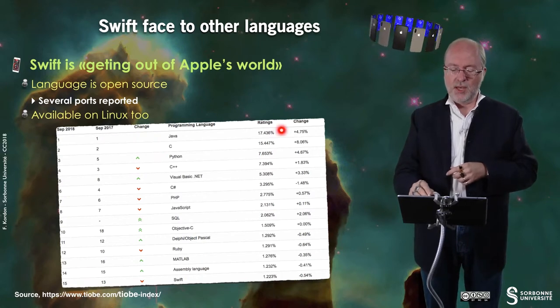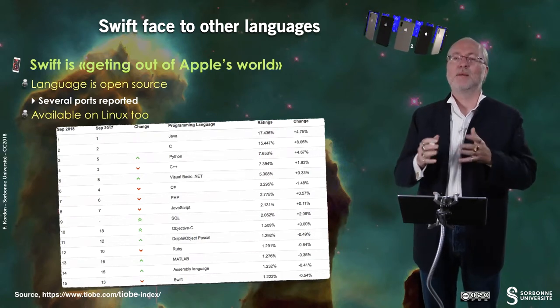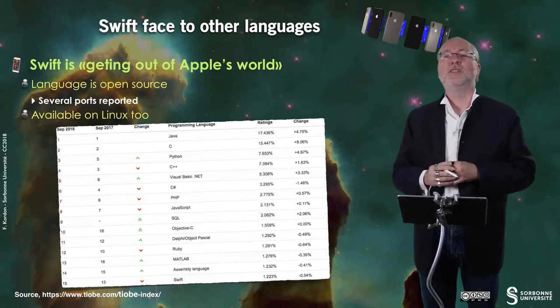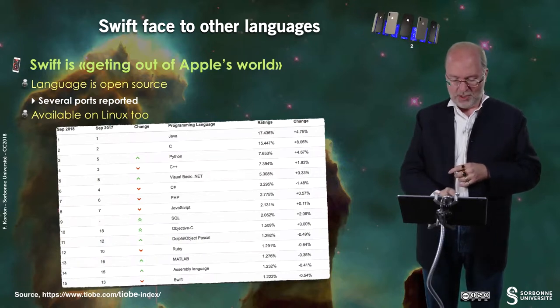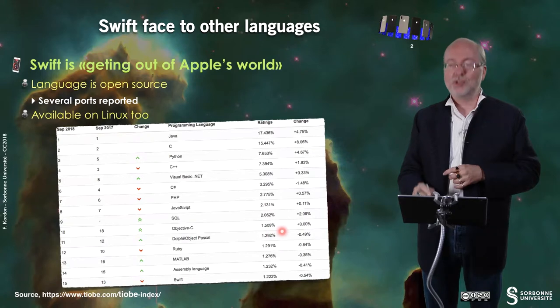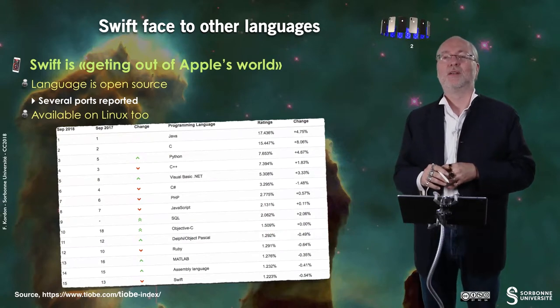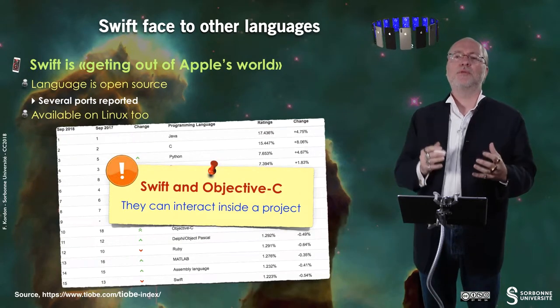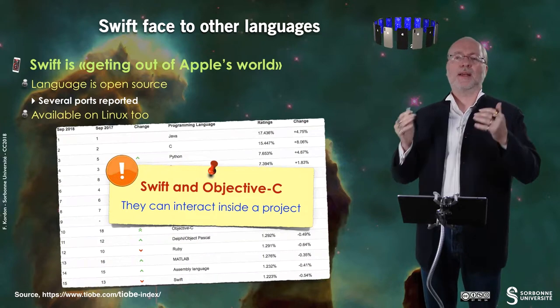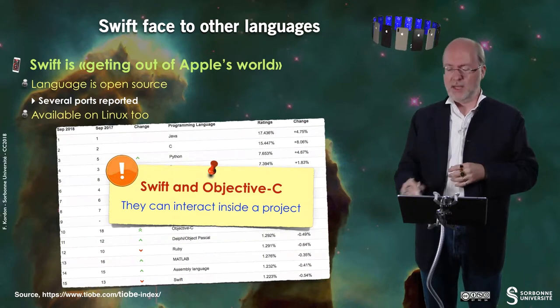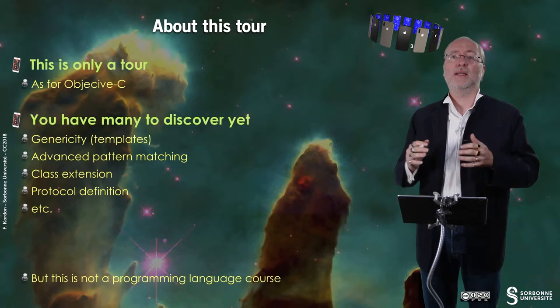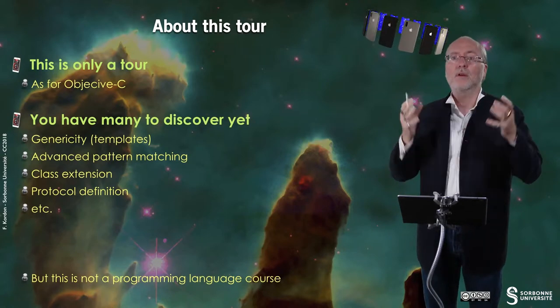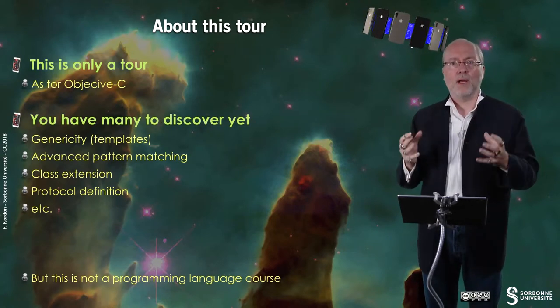You see that very quickly these ratings in terms of percentage are decreasing, because when you are at the 10th position, you just represent 1.5% of the measured activity. The important fact is that Swift and Objective-C can interact inside a project, and they will together live for a while.